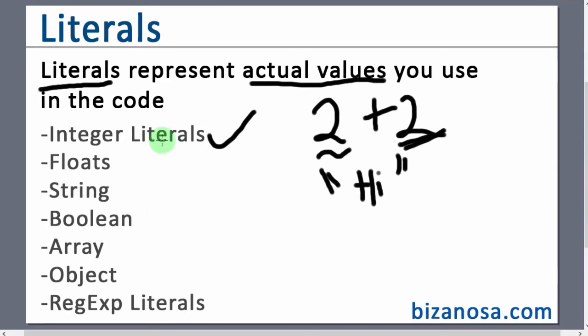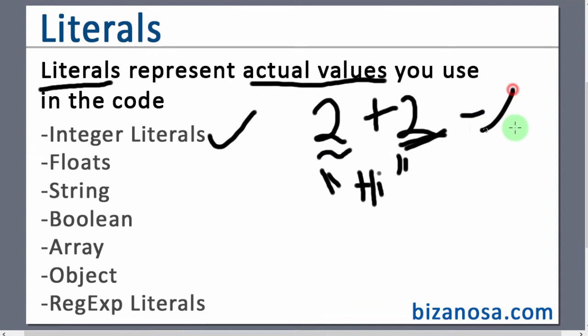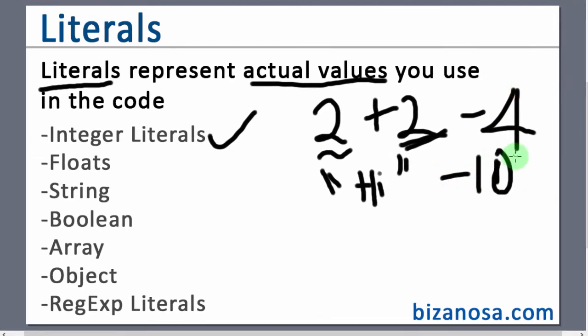We have integer literals that refers to the numbers. Maybe 2, it can be negative 4, negative 1 million, different kinds of numbers.